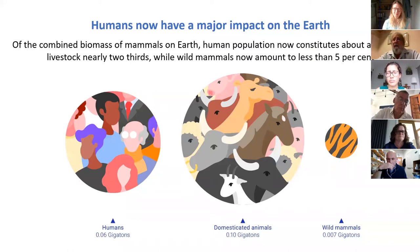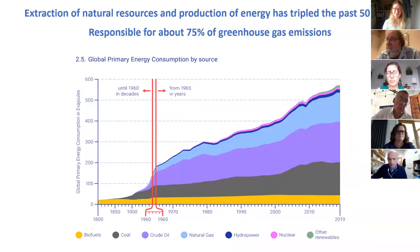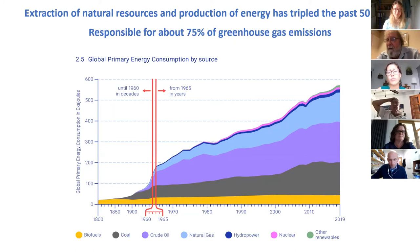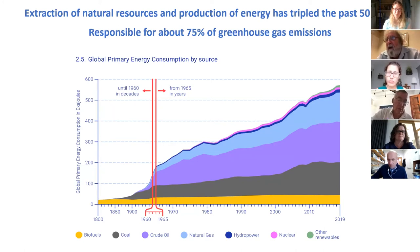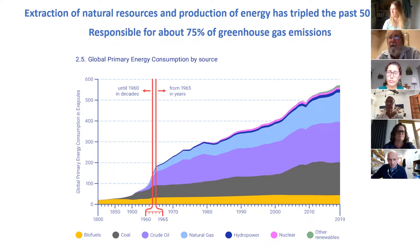Looking at energy demand from the 1800s to today, the key period is the last 50 years from 1960 onwards — we have tripled our demand for energy. This is predominantly fossil fuel energy: coal, oil, and natural gas, with small amounts of hydropower, nuclear, and renewable energy. This use of fossil fuels is responsible for about 75% of greenhouse gas emissions, predominantly CO2 but also methane.